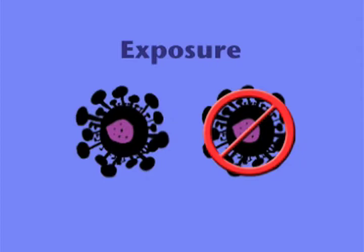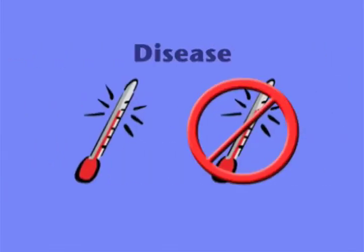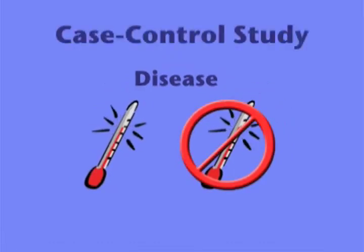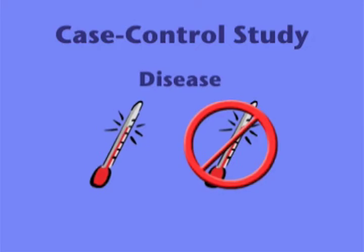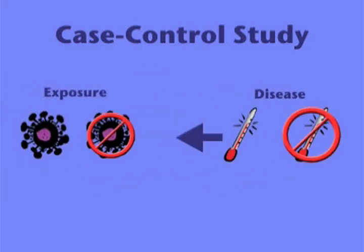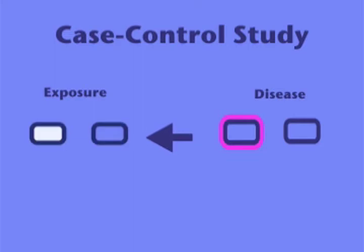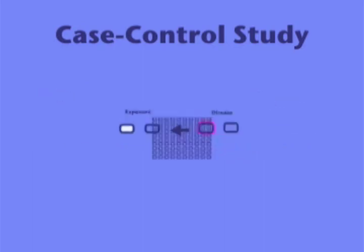We've learned that if the study groups are defined by exposure, then the study is a cohort study. If the groups are defined by disease or outcome status, the study is a case-control study. We choose our study population based on disease and then go back and determine exposure. In our example, we would first choose subjects based on whether they had or did not have a GI bleed, and then determine whether or not they took aspirin. The best way to think of a case-control study is as a sample that is nested within a cohort study.